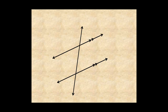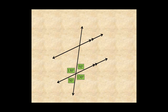If you are given the measure of one of the angles, you can find the measure of all the others. For example, if this angle is 50 degrees, its vertical angle is also 50 degrees. Then the adjacent angles are both supplementary, so they are 130 degrees. Finally, since corresponding angles are congruent, you have the measure of these angles.